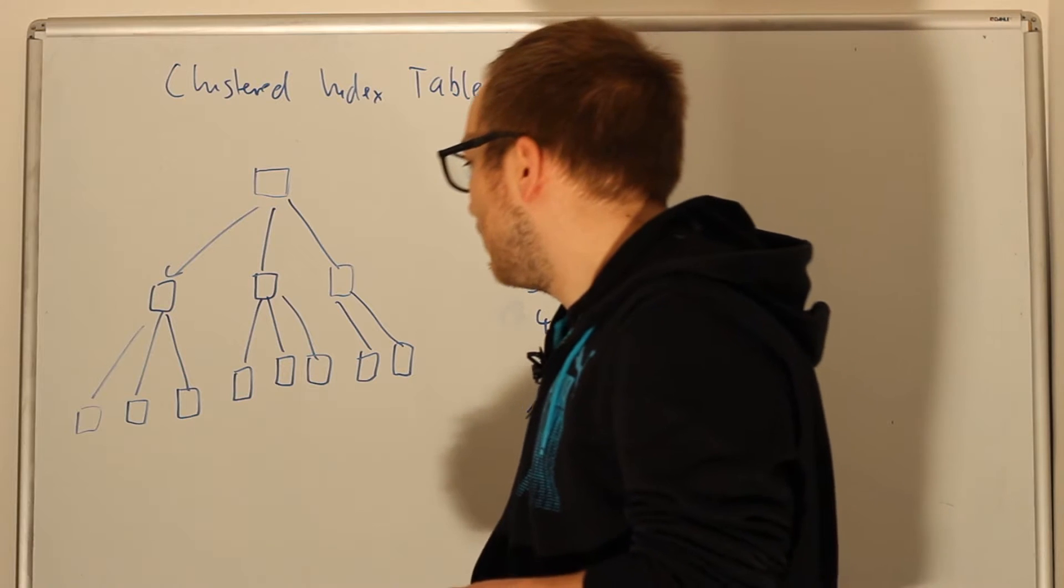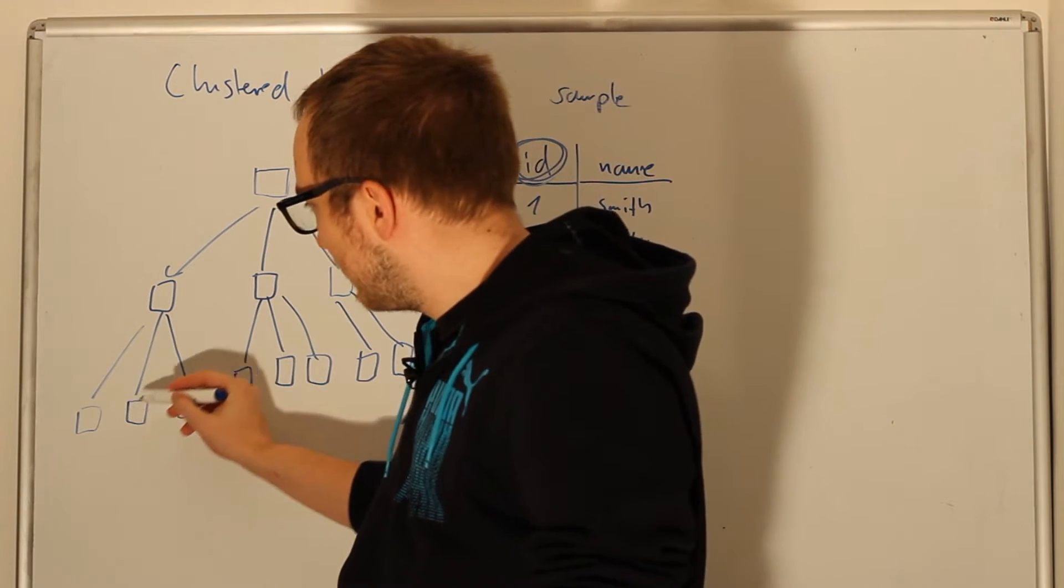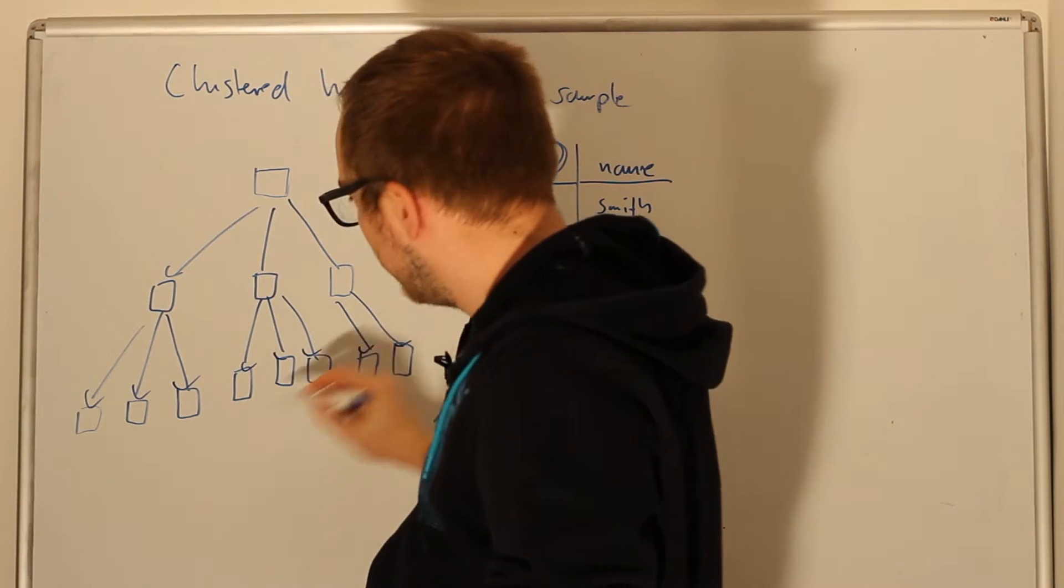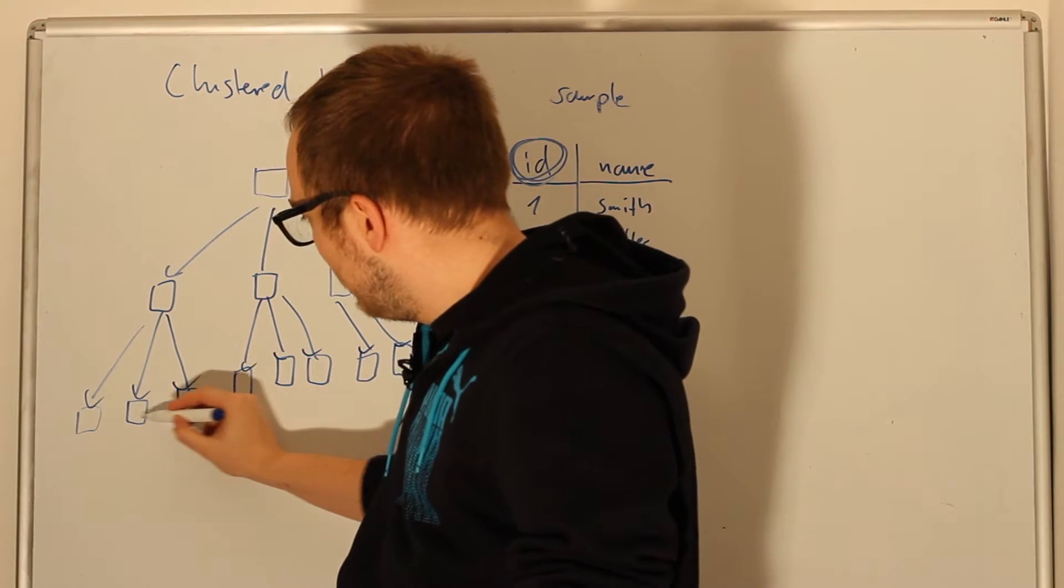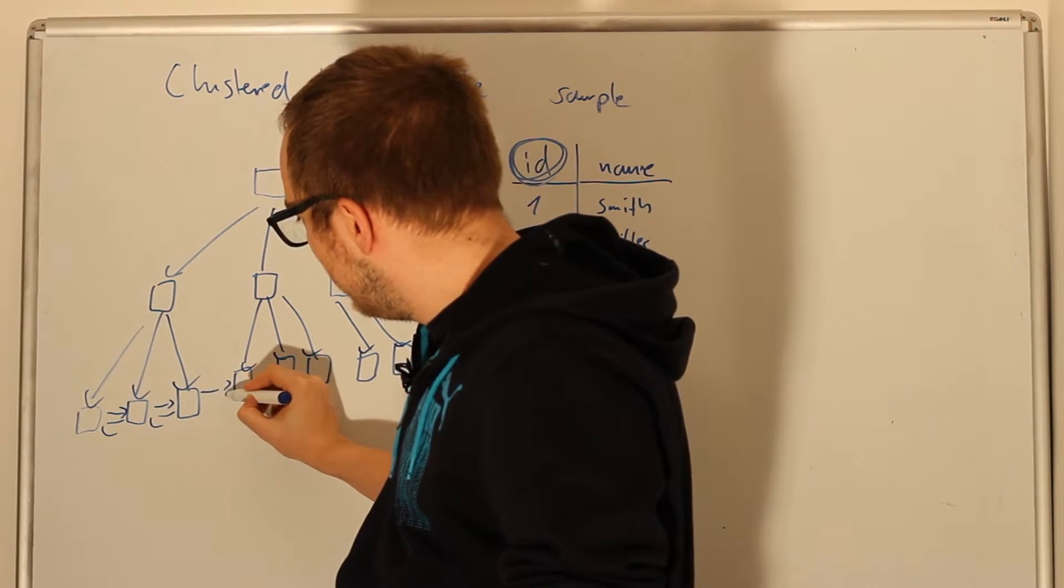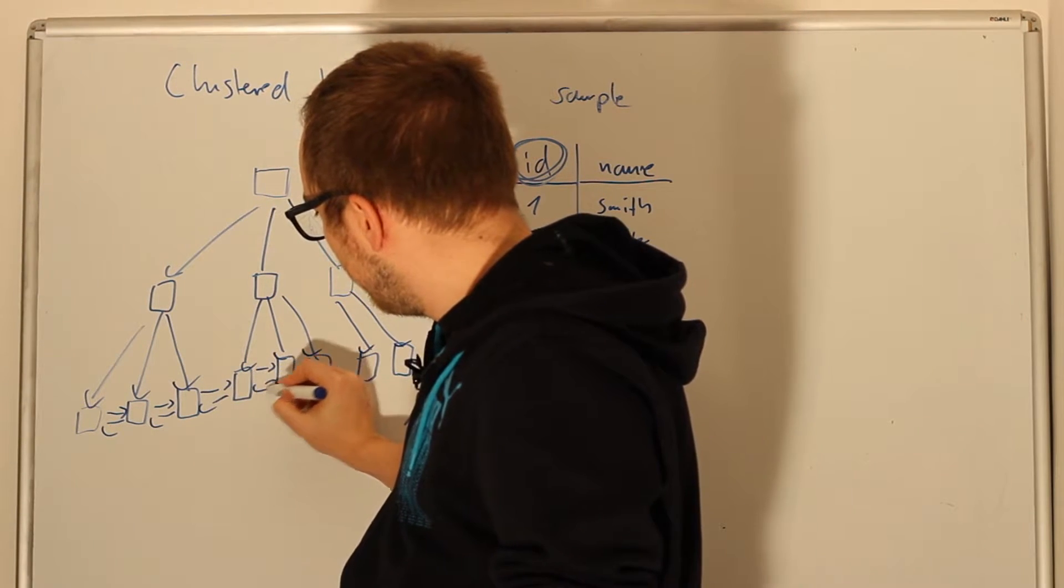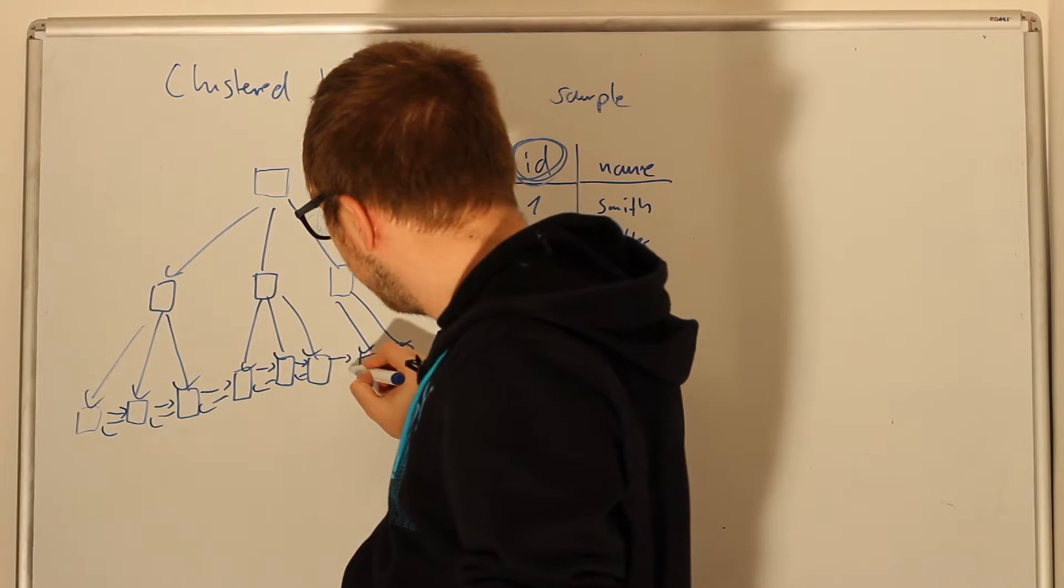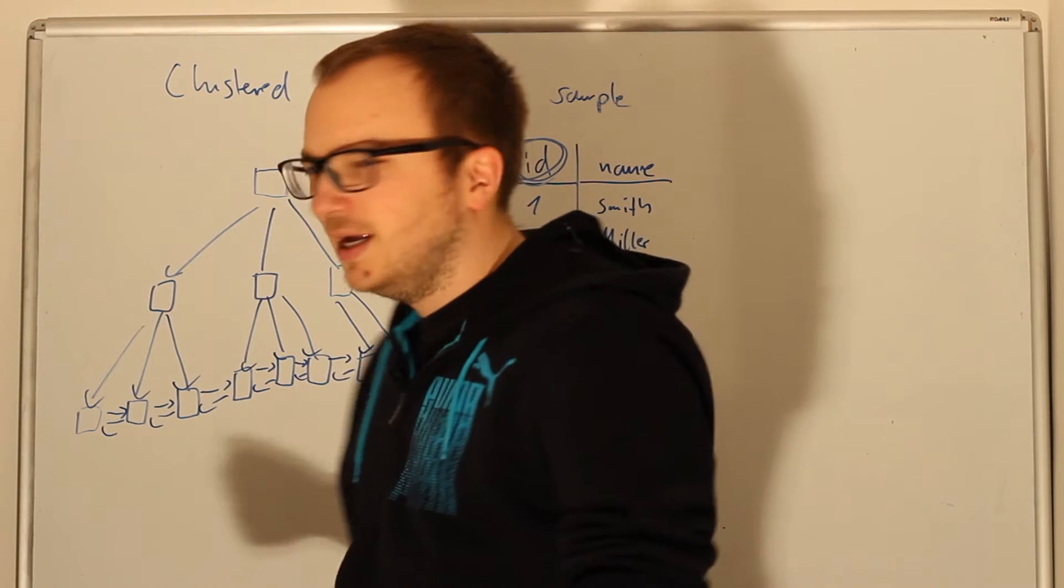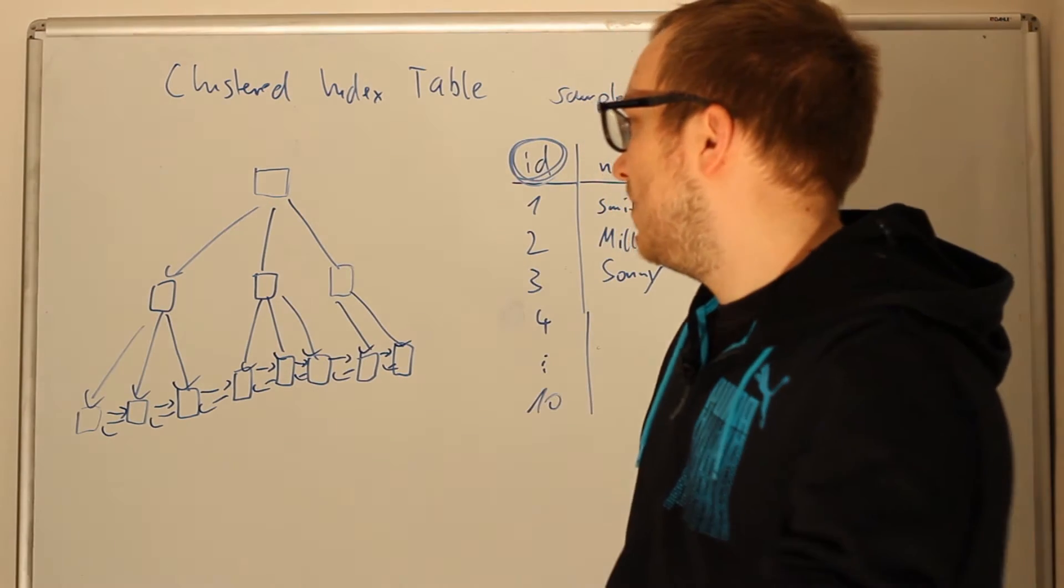In SQL Server we have this structure linked like a B-tree, but it's also linked so that all the leaves are linked in a doubly linked list. This means you can easily navigate forwards and backwards through those leaves.